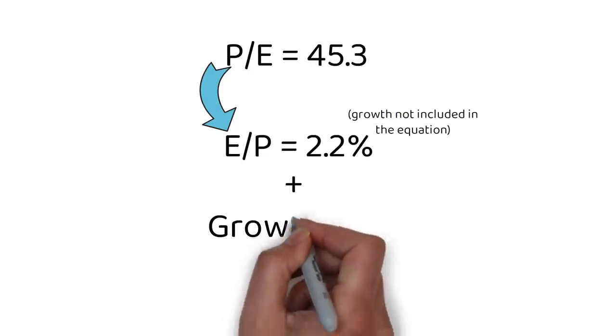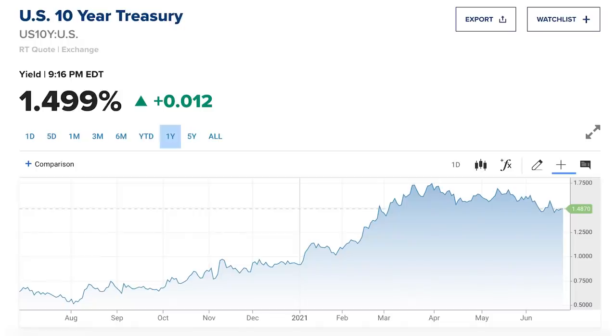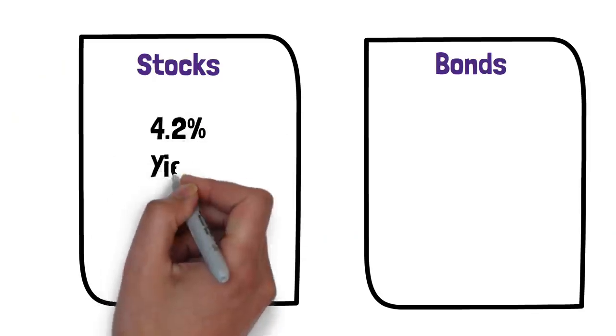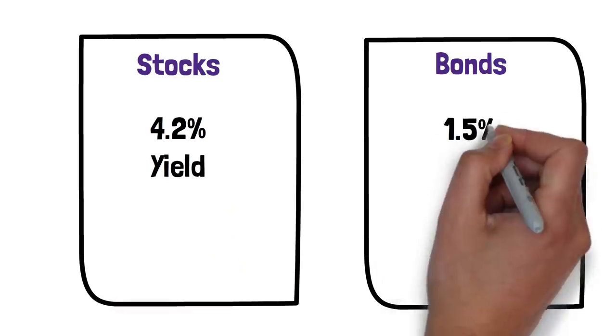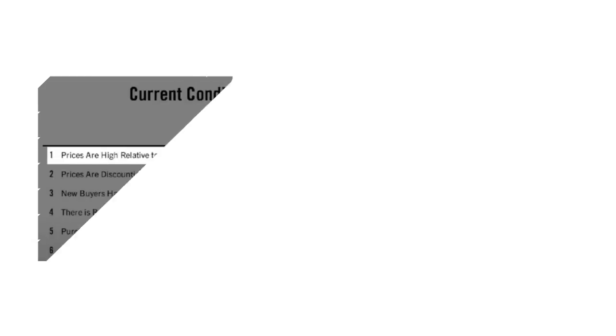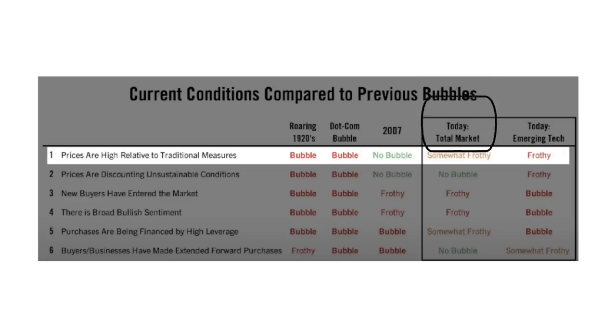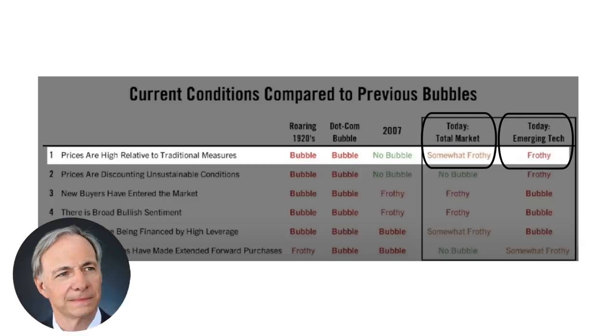But we need to include growth and right now business growth in the USA is around 2% over the past 10 years. So if we add the 2% growth onto the 2.2 earnings yield we get a total return of 4.2%. Now if we take a look at the bond market, bonds are currently yielding around 1.5%, that's the 10 year treasury bond. So if we compare the return we get in the stock market relative to the return that we get in the other main asset, which is bonds, the stock market is not overly expensive. That is why Ray Dalio when he looked at this first measure he got somewhat frothy conditions relative to previous market bubbles. That's for the market as a whole. However if you look at emerging tech it's a different story in terms of price and that reads frothy.